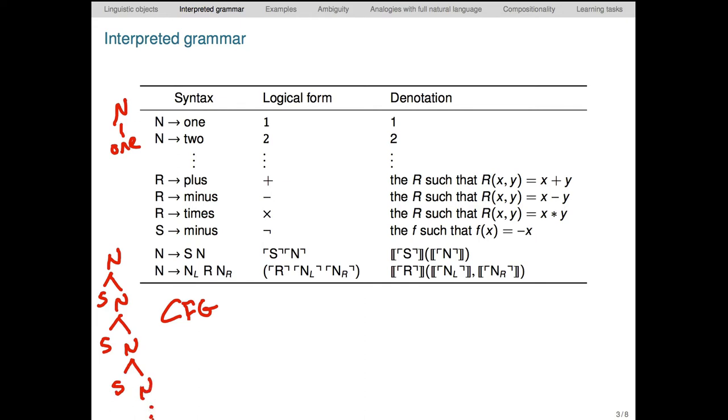The middle column gives the semantic representations, or logical forms, LFs. Again, you can think of these as little programs that we execute. They're given in a format that will be familiar to people who program in Lisp or its offshoots. The slightly unusual look of them as a reminder that they are abstract forms, different from the syntactic structures we build with the context-free grammar. Finally, the right column gives the denotations, or the meanings. For the numbers, this amounts to just a font change, but I wrote out the relations somewhat pedantically as a reminder that these are meanings.